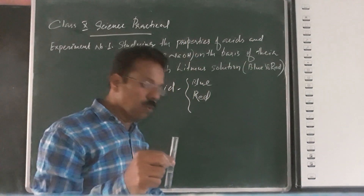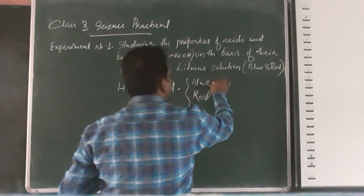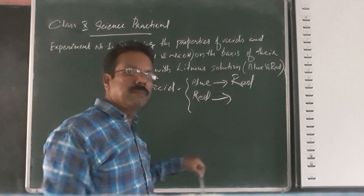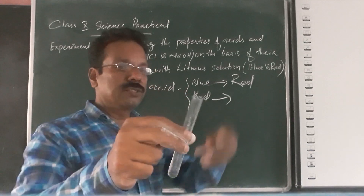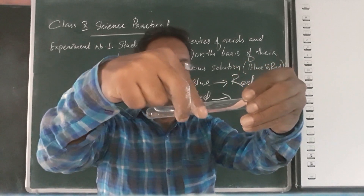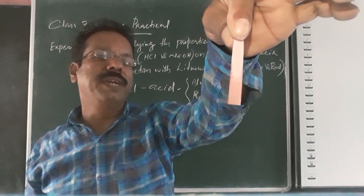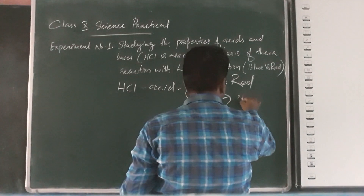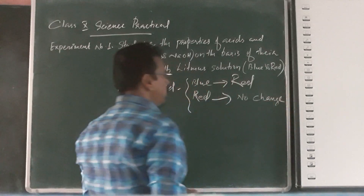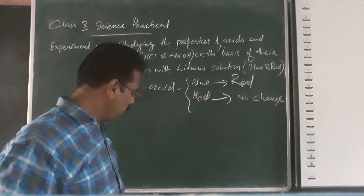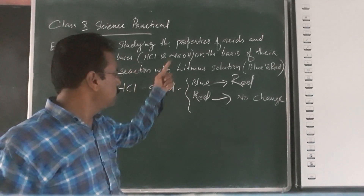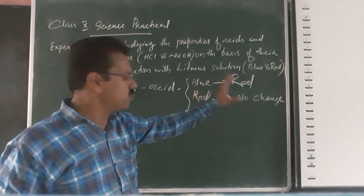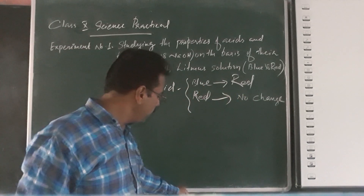In acid, the blue color changes to red — blue litmus changes to red. Then, in the same acid solution, we dip the red litmus. Any color change? No, only a wet appearance — no color change. So, if you are testing an acid with blue and red litmus: if the blue changes to red, that solution is an acid. Red litmus shows no change in acid.